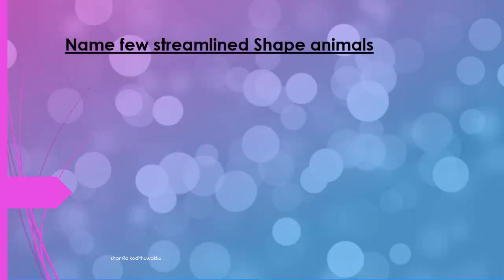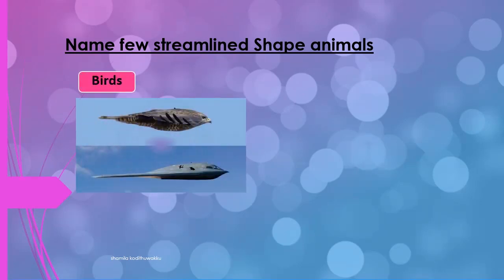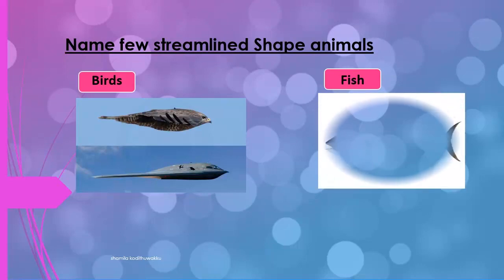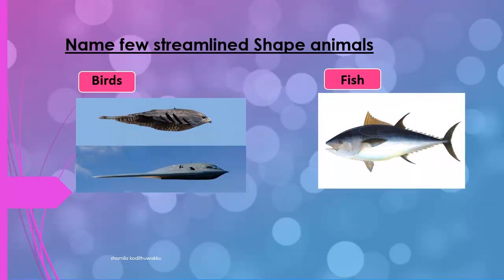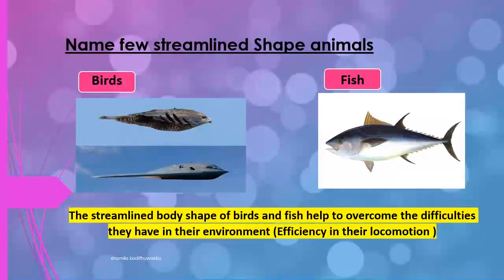Name five streamline-shaped animals. First, birds show streamline shapes — two ends are pointed. Fish also show streamline shapes, with two ends pointed as well.